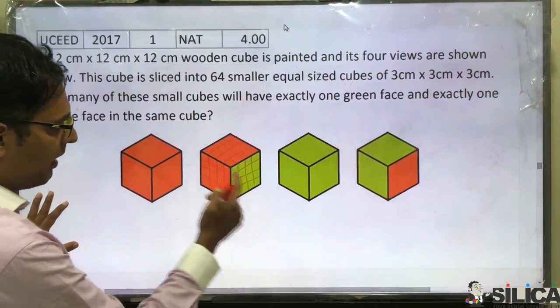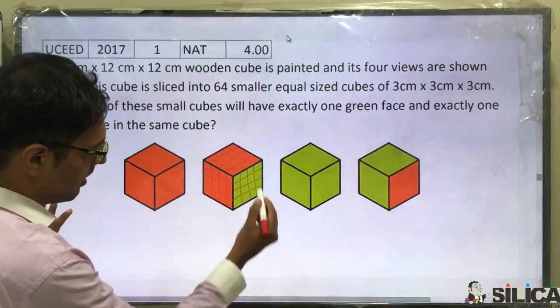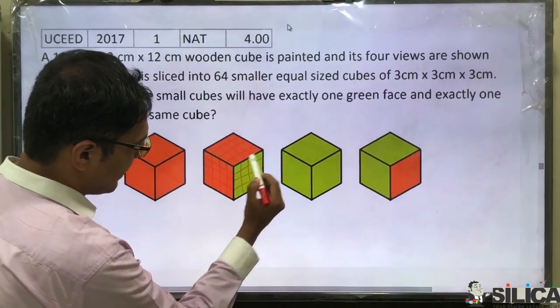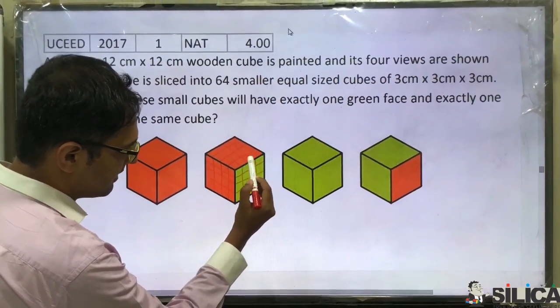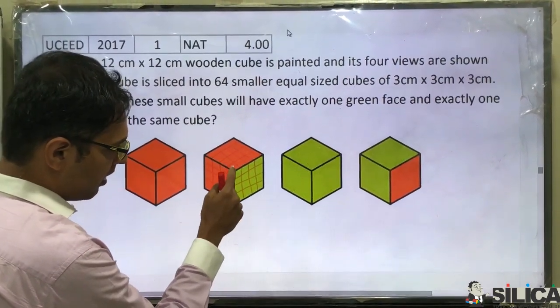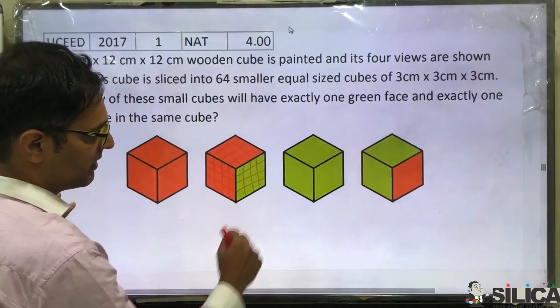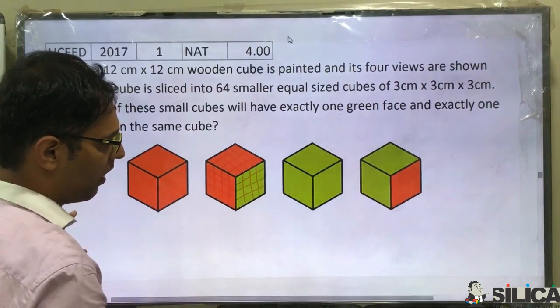Now let's see how many of these cubes will have exactly one green face and one orange face. In this diagram, you see that along this edge, these two in the center will have one green face and one orange face. Because at the corner, this cube will have two orange faces and one green face, whereas at this side, it will have two green faces and one orange face.